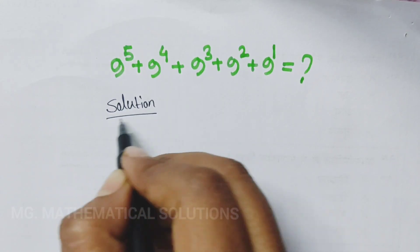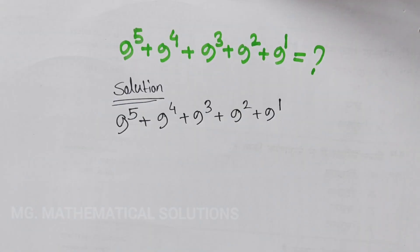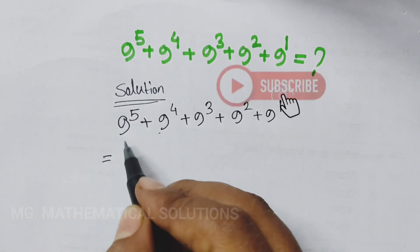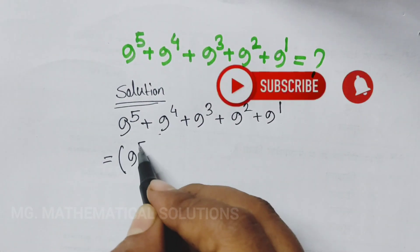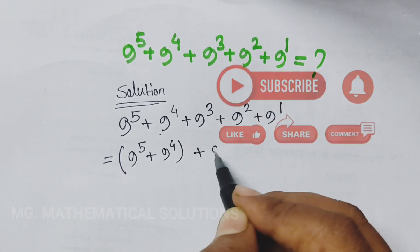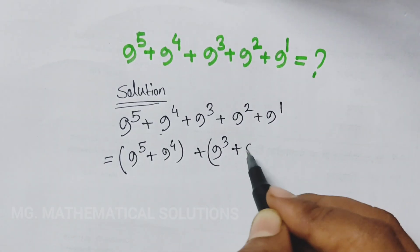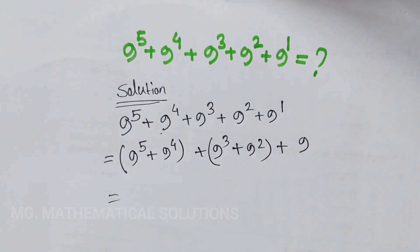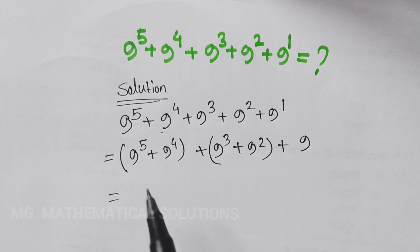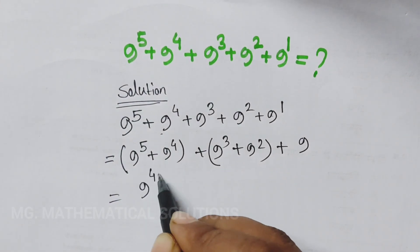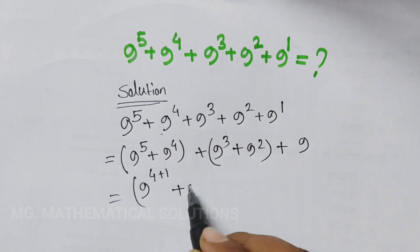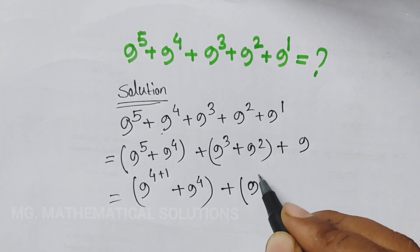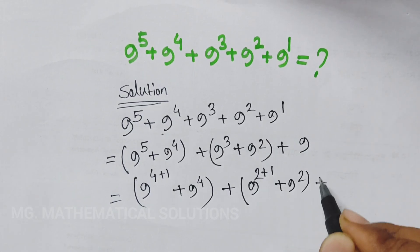Solution. We will group these two together and these two together. Equal to: first group of (9 to the power 5 plus 9 to the power 4 plus 9 to the power 3), plus second group of (9 squared plus 9). We can write 5 as 4 plus 1, so we have 9 to the power (4+1), plus 9 to the power 4, plus 9 to the power (2+1), plus 9 squared plus 9.